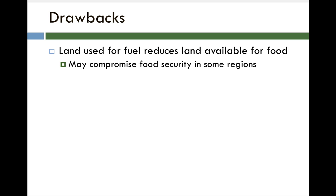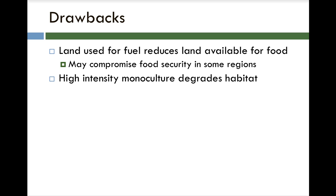One of the biggest drawbacks is that land used to grow fuel crops could have been used to grow food instead. In a time when many people are starving in other countries, we're using cropland to grow fuel for our cars. A continued shift toward biofuels may compromise food security in regions like Africa, Southeast Asia, and South America. Also, biofuels typically rely on a single crop, leading to high-intensity monoculture — high inputs of fertilizer, pesticides, and water — which can degrade the local habitat.